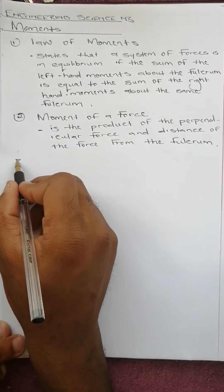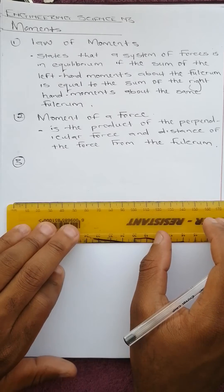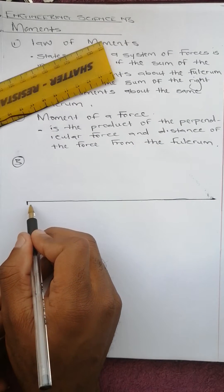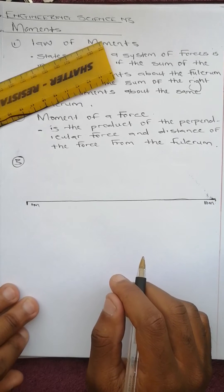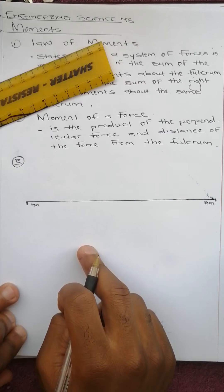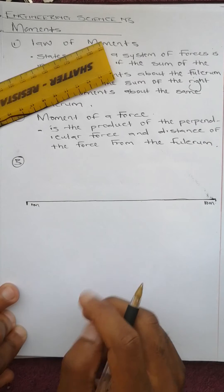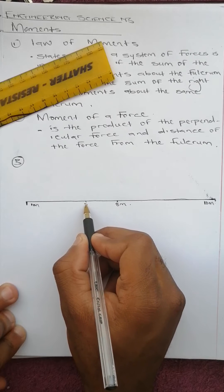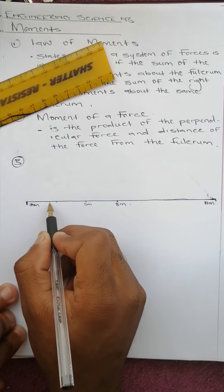For number three it will be much better if we draw this beam. The beam goes from here — it's 16 meters long. We are told there are concentrated loads of 70 newtons and 100 newtons which are 2 meters and 5 meters from the left-hand side. The center of the beam is at 8 meters, so 5 meters is somewhere here and 2 meters is here.